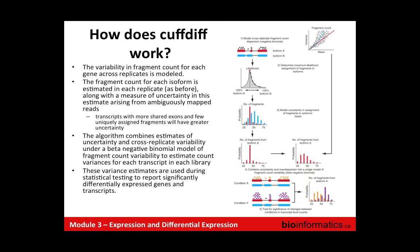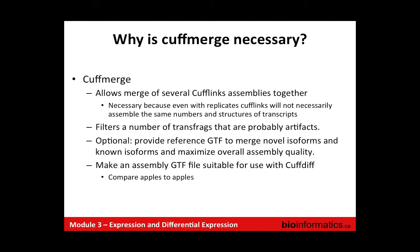Those variance estimates are then used in statistical testing to report significantly differentially expressed genes and transcripts, using modifications of typical statistics you would use to calculate differential expression. The next step between CuffLinks and CuffDiff is CuffMerge.